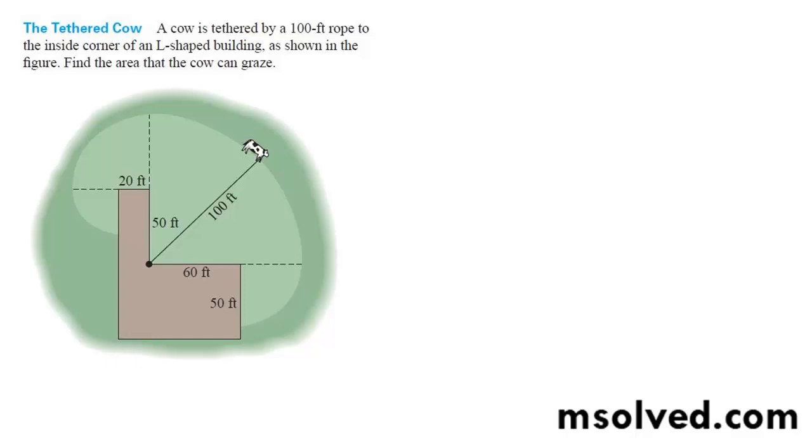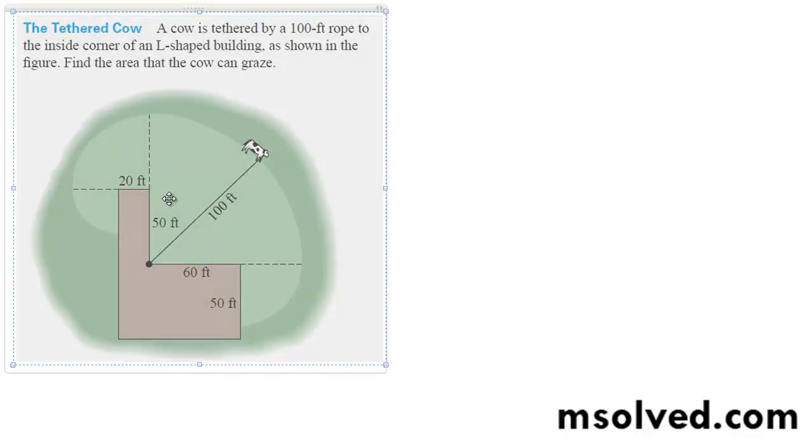We've got two different areas here we need to take into account with the cow and their grazing area. Two areas, we've got four areas.